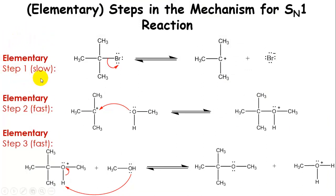Just a little reminder, we had three steps in this mechanism. Each of these is an elementary step. This first step is the simplest step we can possibly write. We start with our T-butyl bromide, and we end up with a carbocation and this bromide anion.